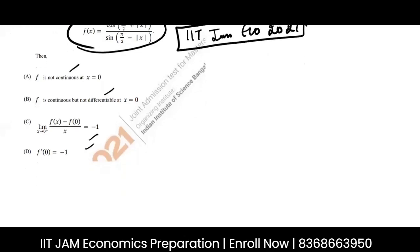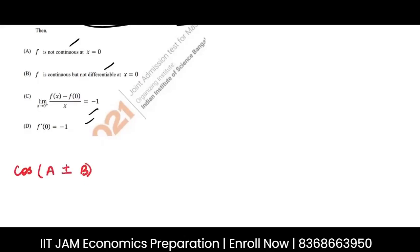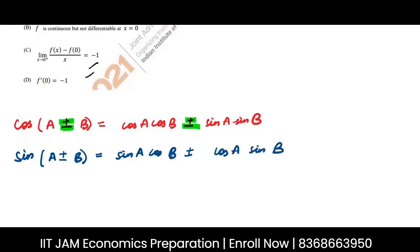Before we approach this question, we should know a few formulas of cosine and sine. cos(A ± B) = cos A cos B ∓ sin A sin B. So cos(A + B) = cos A cos B + sin A sin B, and cos(A − B) = cos A cos B − sin A sin B. Similarly, sin(A ± B) = sin A cos B ± cos A sin B. So sin(A + B) = sin A cos B + cos A sin B, and sin(A − B) = sin A cos B − cos A sin B.